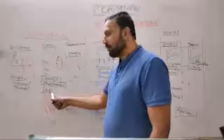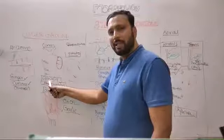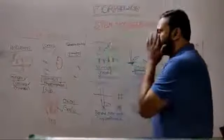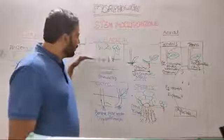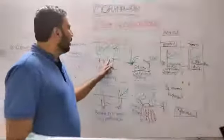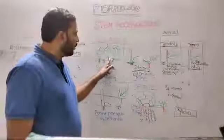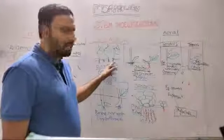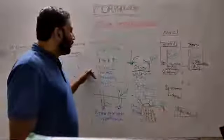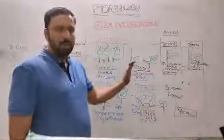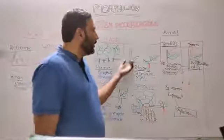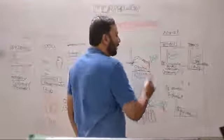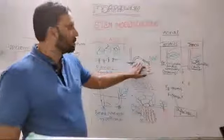Subarial stem modifications include runners, stolons, suckers, and offset. In runners, the stem grows creeping on the soil with roots present at every node; when the internode breaks off, each node can survive as an independent plant — example grasses and strawberry. In stolons, example Jasminum and mint, the branch grows obliquely downwards and when it touches the soil it forms roots.